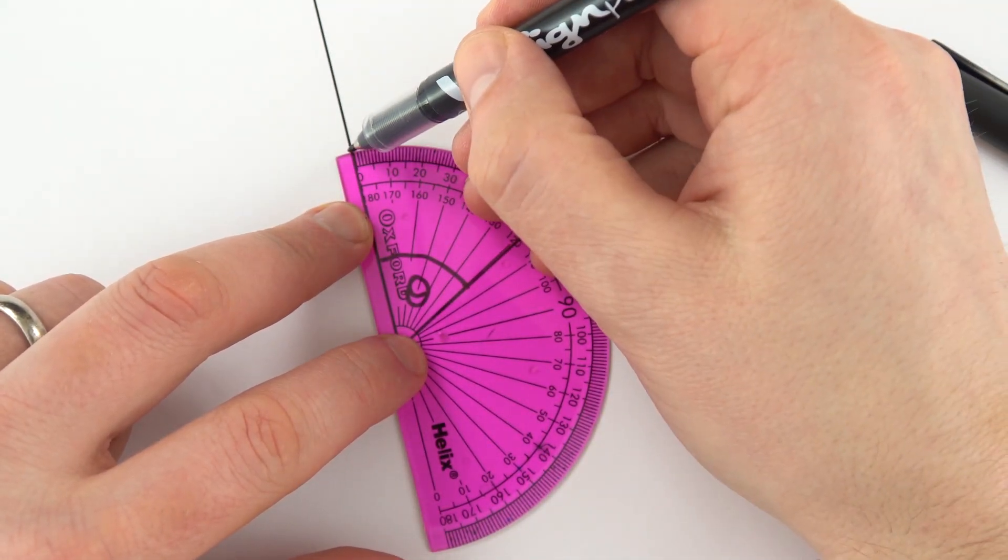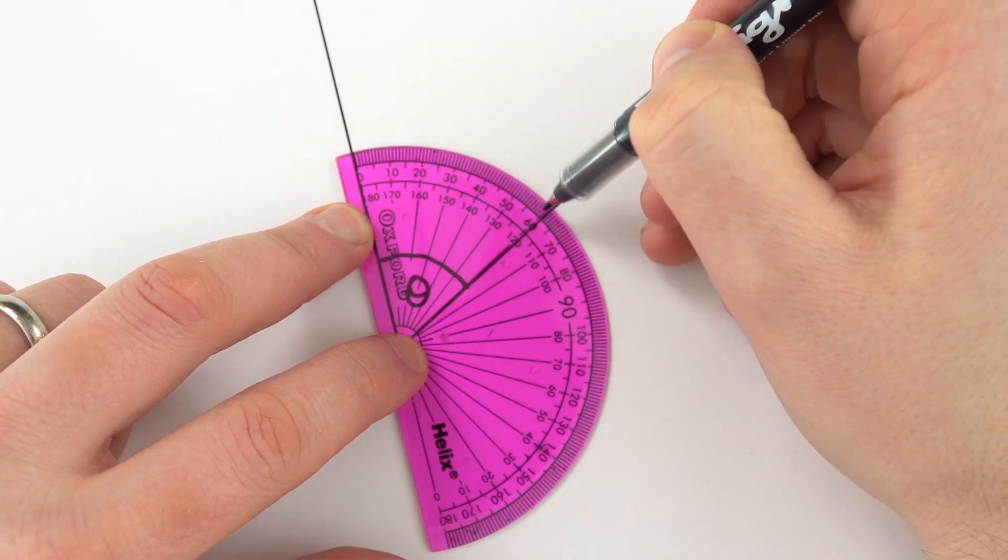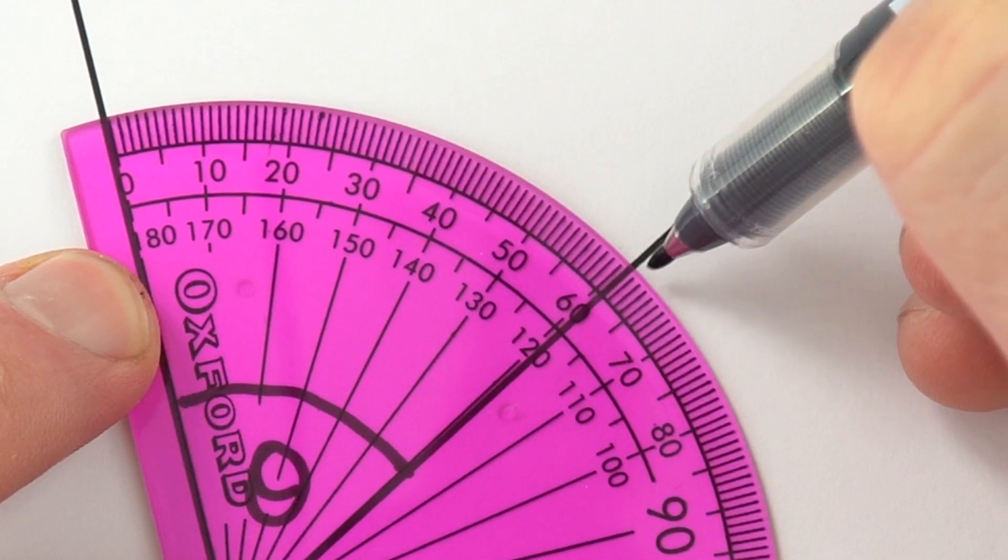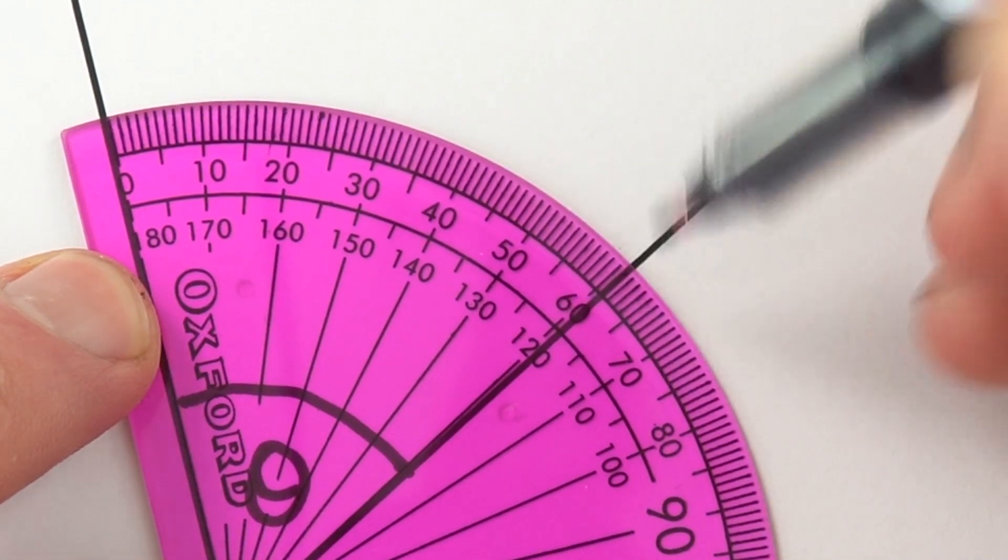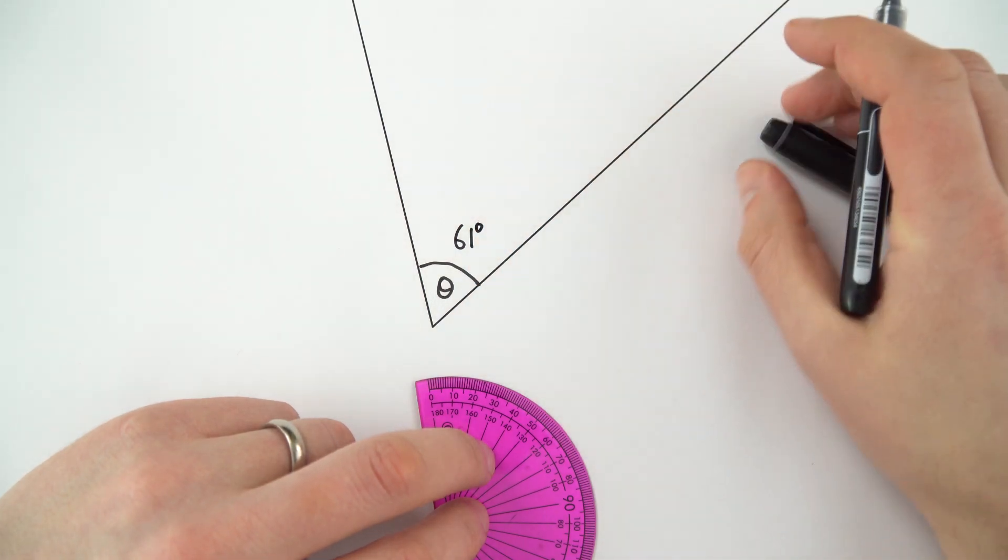So we can see that we start at zero using the outer scale and we can see we've got 10, 20, all the way up to 60. And if we look at this area in a little bit more detail, we'll see that the line is just above 60, so this one here is an angle of 61 degrees.